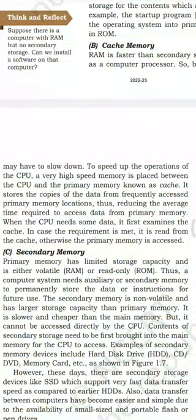very high speed memory is placed between the CPU and the primary memory, known as cache. It stores the copies of the data from frequently accessed primary memory locations, thus reducing the average time required to access data from primary memory.